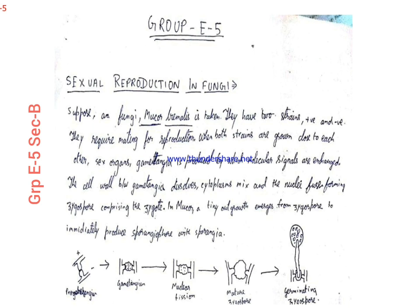From the diagram we can see the progametangium, the positive and the negative strains, the formation of gametangium, the nuclear fusion between the two gametangia, formation of the zygote, and a tiny outgrowth immediately causing the formation of sporangium and the sporangiophore. This is the germinating zygote.